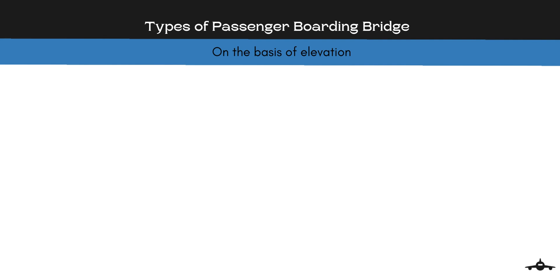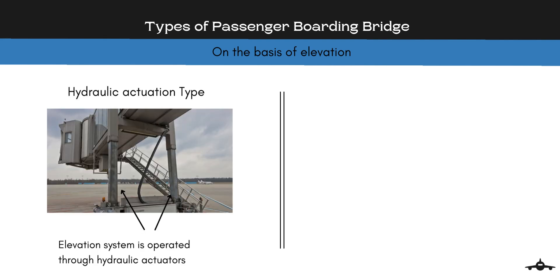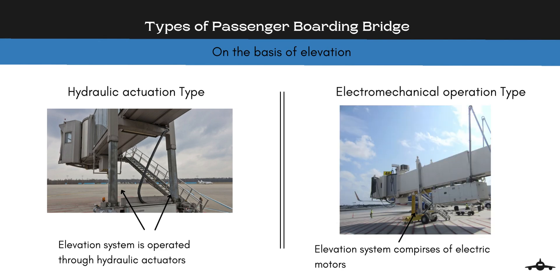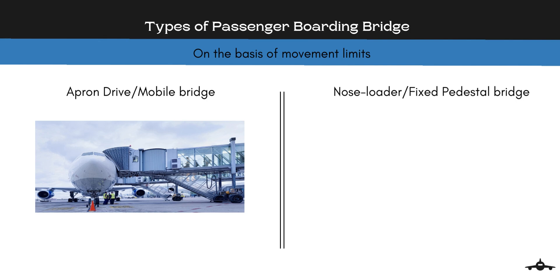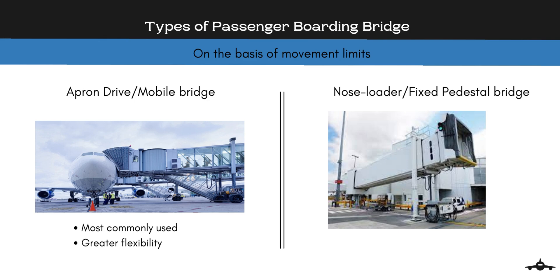Passenger boarding bridges generally used in airports are classified based on elevation and are of 2 types. Hydraulic actuation uses hydraulic actuators for the elevation column, whereas electromechanical operation comprises electric motors for the elevation column control — this type is the choice of most modern airports. Passenger boarding bridges are also classified based on movement limits into 2 types: apron drive, also known as mobile passenger boarding bridge, which is the most common type and offers greater flexibility; and nose loader passenger boarding bridge, also known as a fixed pedestal boarding bridge, which has limited flexibility and is suitable for restricted bays.